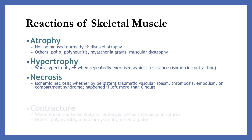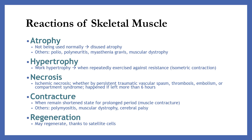Reactions of skeletal muscle. The first is atrophy, when the muscle is not being used normally, called disuse atrophy. Other conditions include polio, polyneuritis, myasthenia gravis, and muscular dystrophy. The second is hypertrophy, or work hypertrophy, when the muscle is repeatedly exercised against resistance or in isometric contraction. The third is necrosis, in conditions of ischemic necrosis, whether by persistent traumatic vascular spasm, thrombosis, embolism, or compartment syndrome, if lasting more than 6 hours. The fourth is contracture, when the muscle remains in a shortened state for a prolonged period. Other conditions include polyneuritis, muscular dystrophy, and cerebral palsy. The last is regeneration, which may occur thanks to satellite cells.